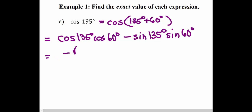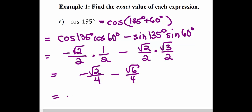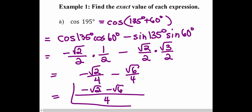Cosine of 135 is −√2/2, times cosine of 60, which is 1/2, minus sine of 135, which is √2/2, times sine of 60, which is √3/2. We multiply across the two fractions. Now that they have the same denominator, we keep the same denominator and combine the two numerators. So the cosine value of 195 degrees is (−√2 − √6) / 4.